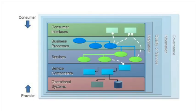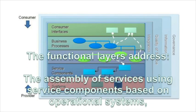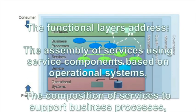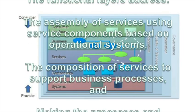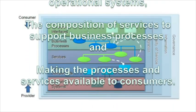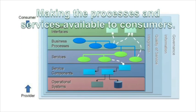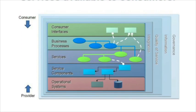The SOA Reference Architecture defines a set of five functional layers that are domain-specific, where you as a provider can define your specific services, your components that you'll need to implement those services, and how they're going to use your existing operational systems. In addition, it supports exposing your business processes as services as well. The functional layers also support the consumer's access to the services and processes using the services.